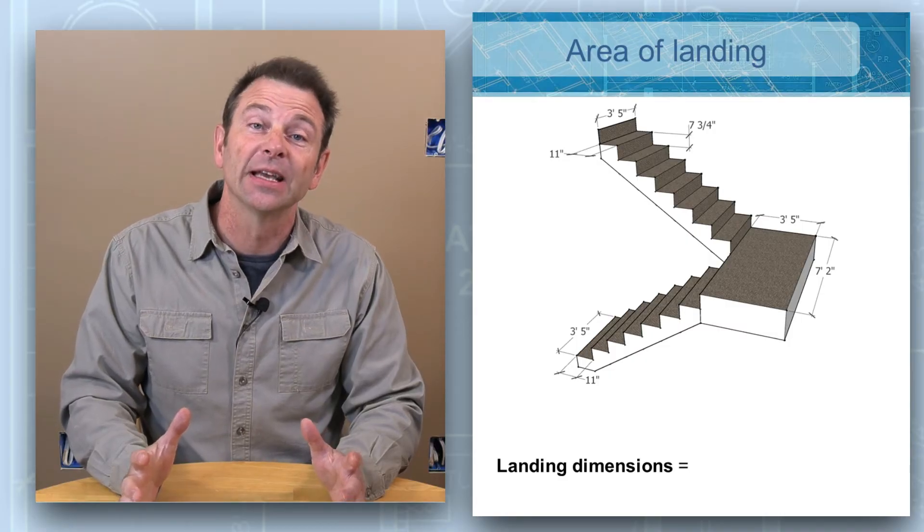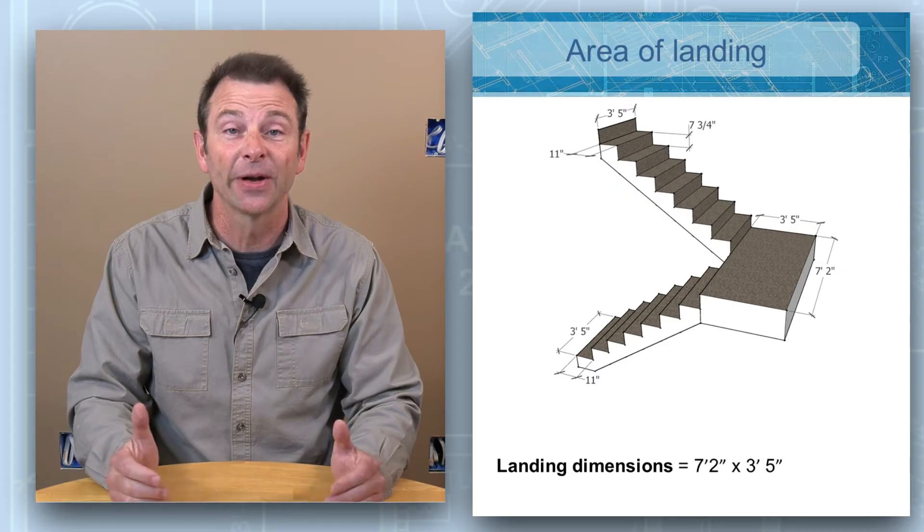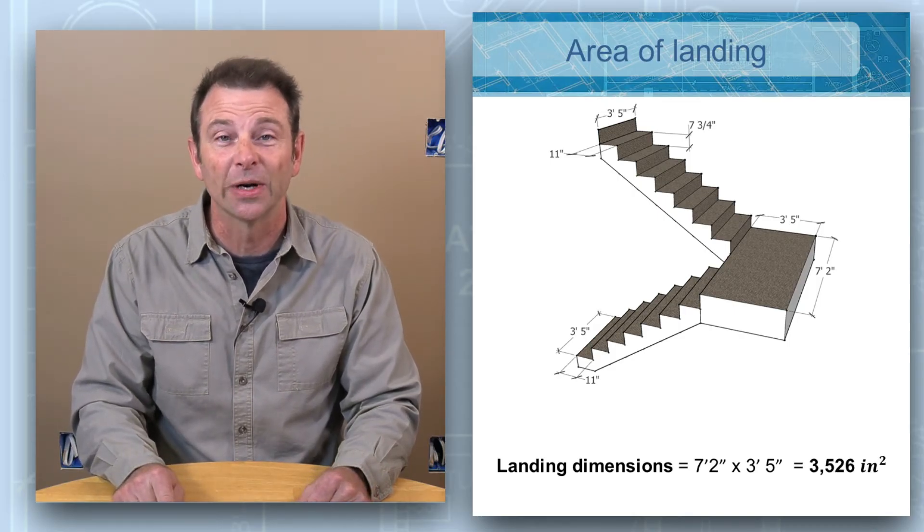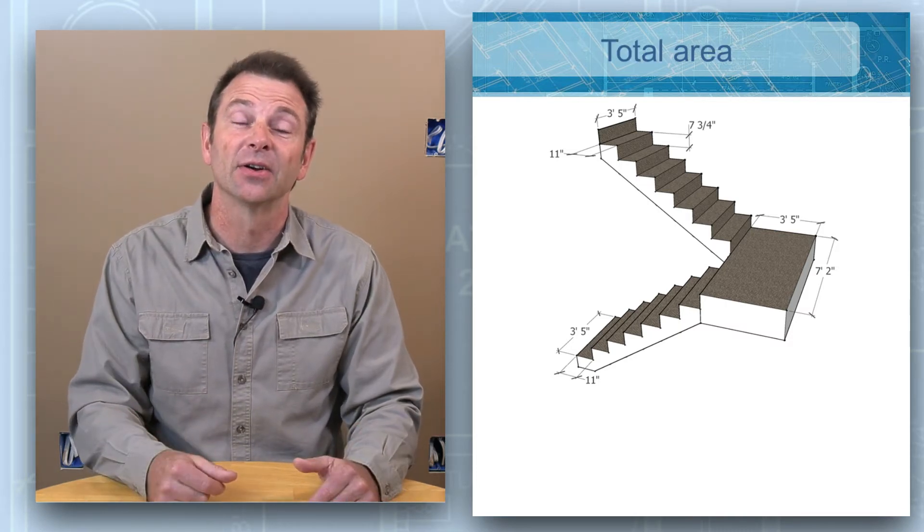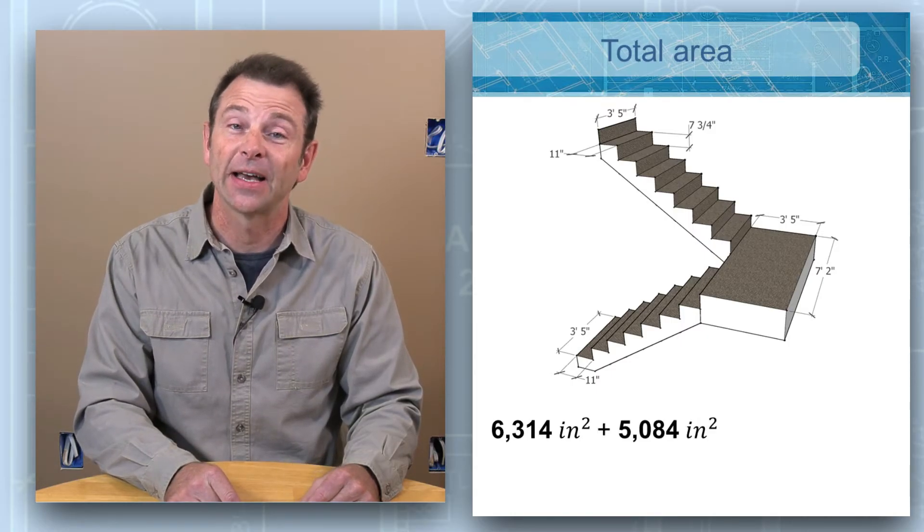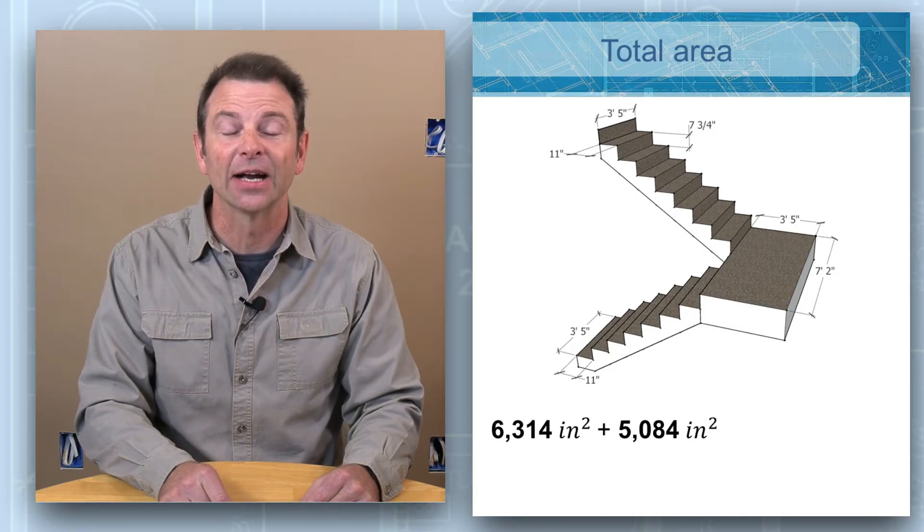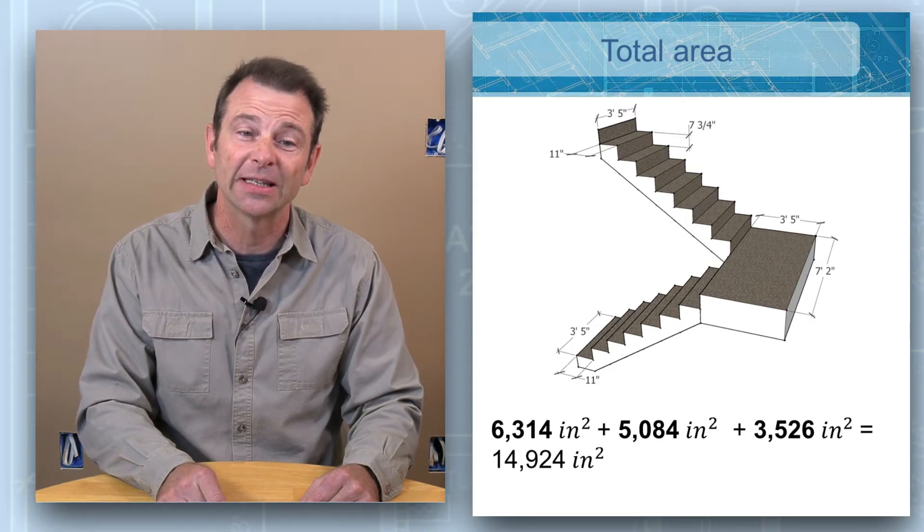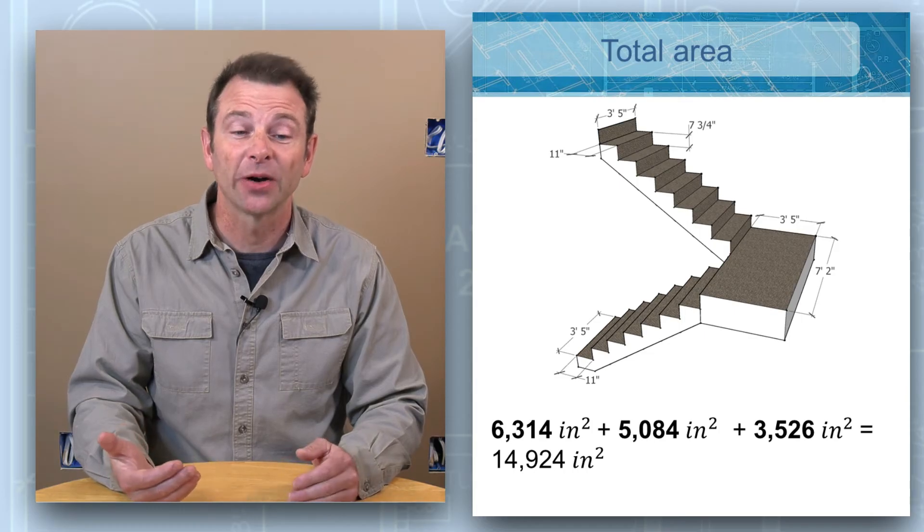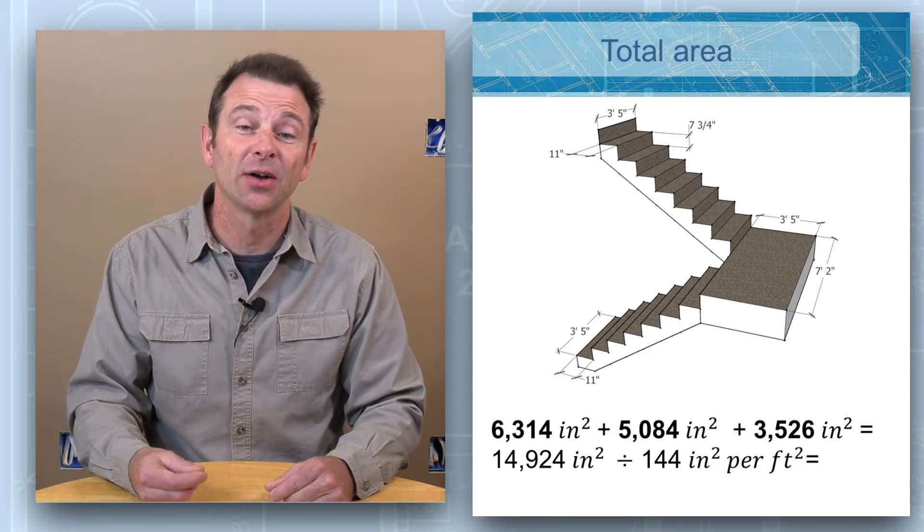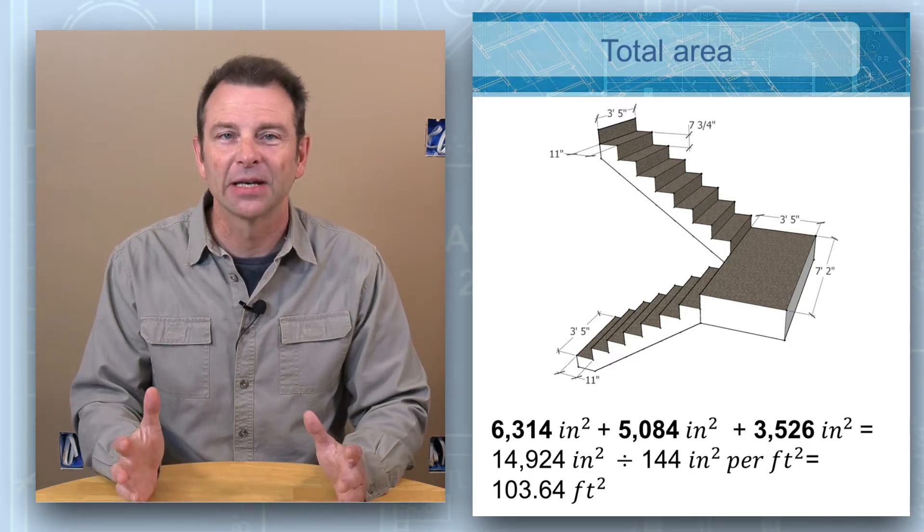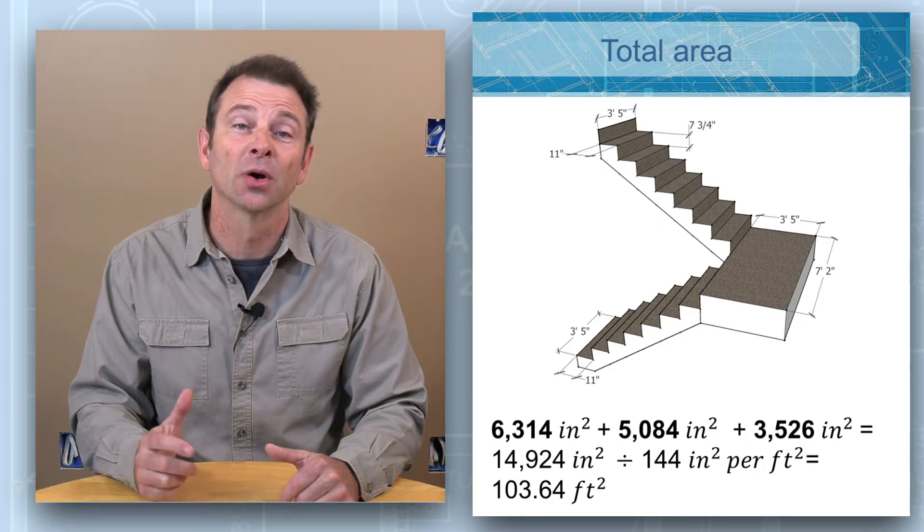The last area we need to calculate is going to be the area of the landing. This is fairly simple. It is a space that is three foot five by seven foot two. We can multiply these two numbers together length times width to arrive at the area of 3,526 square inches. Now it's time to add up all of these areas. Our stair treads were a total of 6,314 square inches. We can add that to our riser area of 5,084 square inches. And then last we'll add our landing area of 3,526 square inches. This is going to be a total of 14,924 square inches. Since we want this measurement to be in square feet for our answer, we can take our square inches of 14,924 divide that by 144 square inches per square foot to arrive at 103.64 square feet. Our exact measurement to cover all areas here is going to be 103.64 square feet.